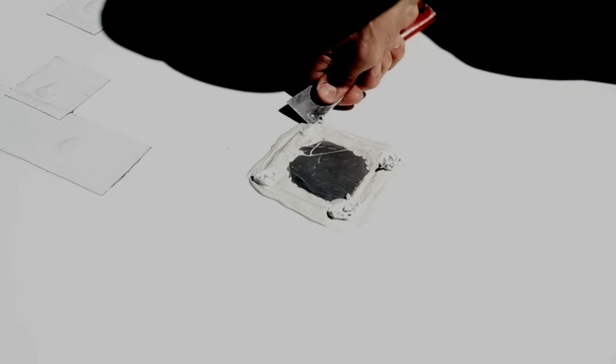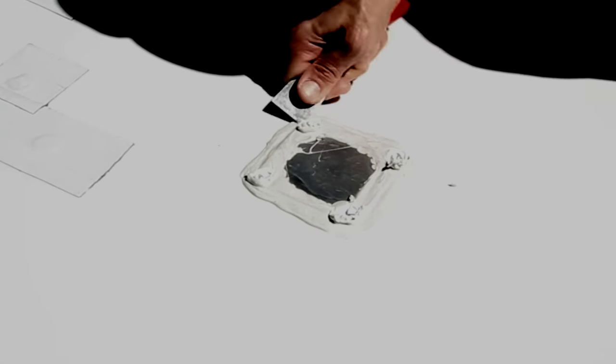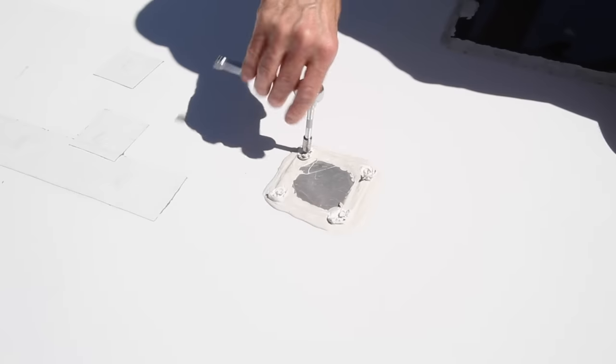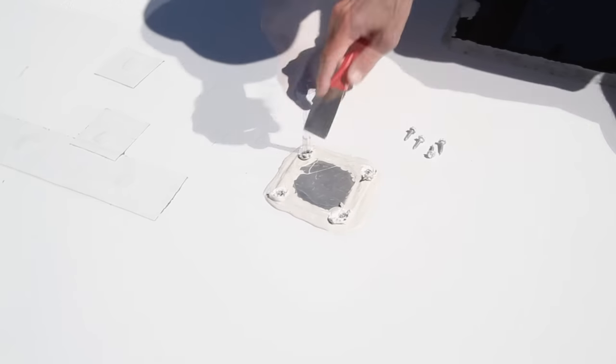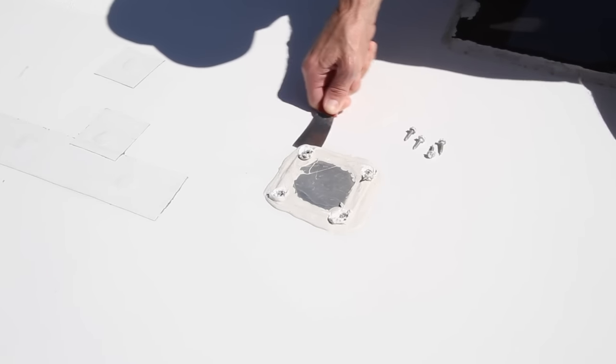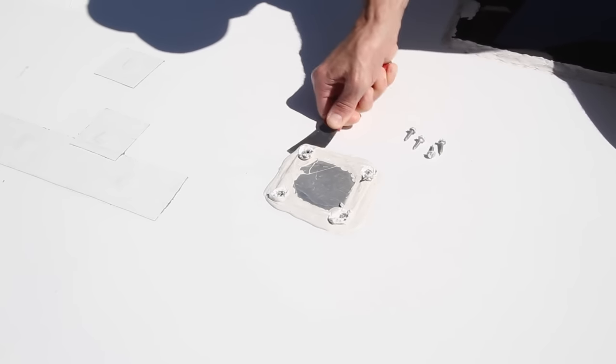Now we'll use our putty knife to expose the heads of the screws on the conduit access plate. Then we'll remove the screws and use our putty knife again to slice through the decor that's holding the plate in place.